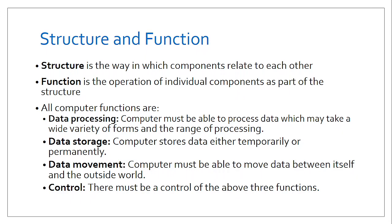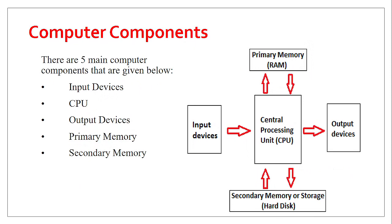When we dive deep into understanding the organization of computers, we can categorically say that computers are made of five components: input devices, the CPU, output devices, primary memory, and secondary memory.